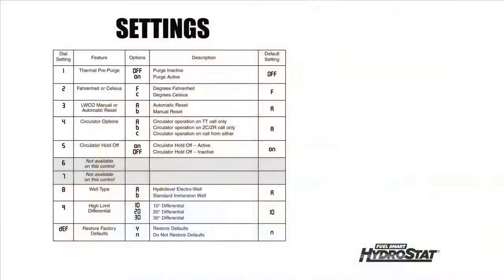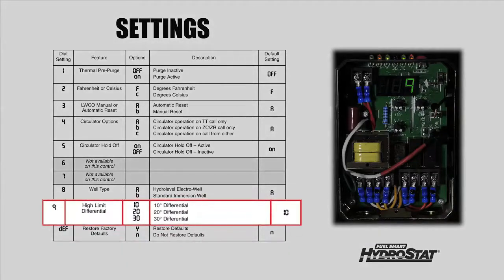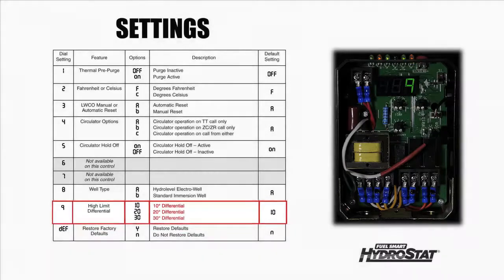Option nine allows you to set a fixed differential of 10, 20 or 30 degrees Fahrenheit off of the high limit setting. This feature can only be used if the economy function is turned off. When the economy function is active,